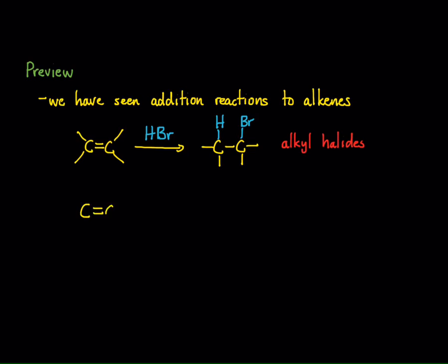The other reaction that we saw in Chapter 3 is a similar mechanism where we take the hydronium ion. So we take water in some type of acid like sulfuric acid or phosphoric acid, and we can add water across the double bond. And so we get alcohols from this.